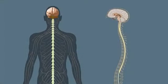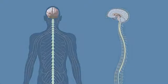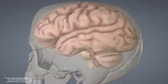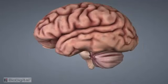Let us discuss the central nervous system. It serves as the main processing center for the entire nervous system. The first component is the brain — the largest mass of nervous tissue, composed of billions of nerve cells and chambers or ventricles filled with cerebrospinal fluid.